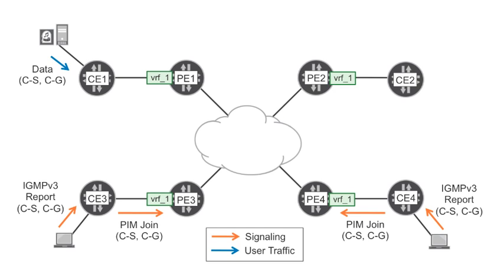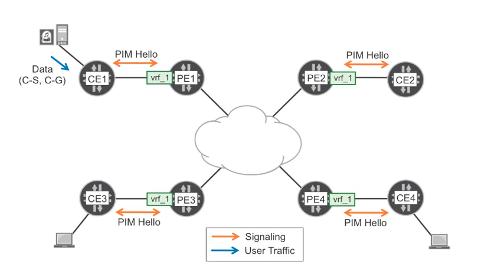Up to now, PE3 and PE4 each received a PIM join from their downstream CEs. Unfortunately, they could not process the join further up to PE1. You now need to make the PEs neighbors of each other, but there is no PIM in the core. Is PIM the best protocol for this purpose?